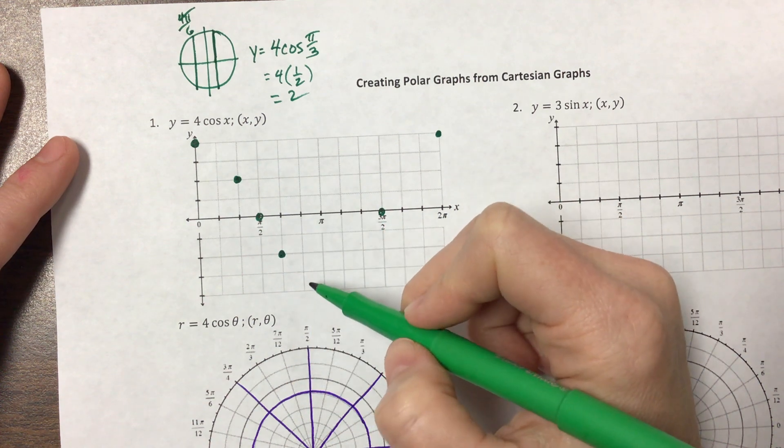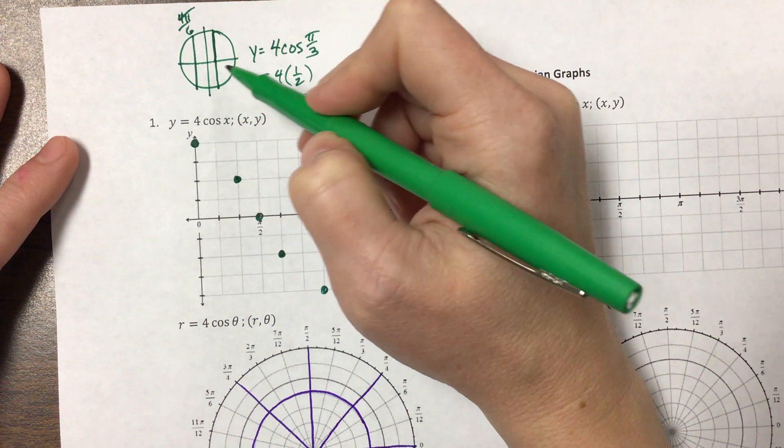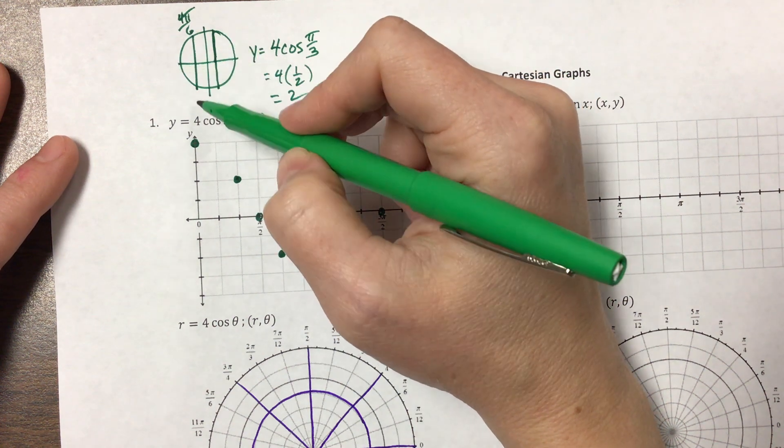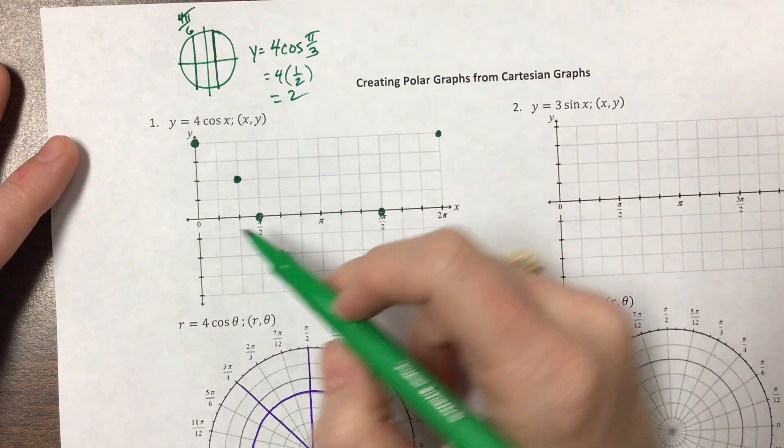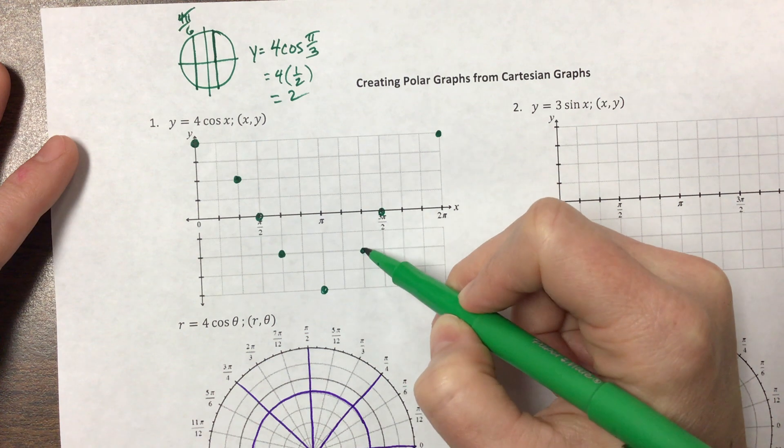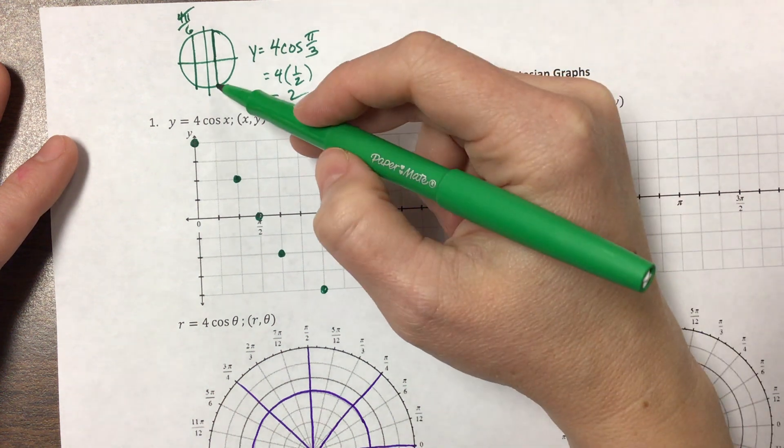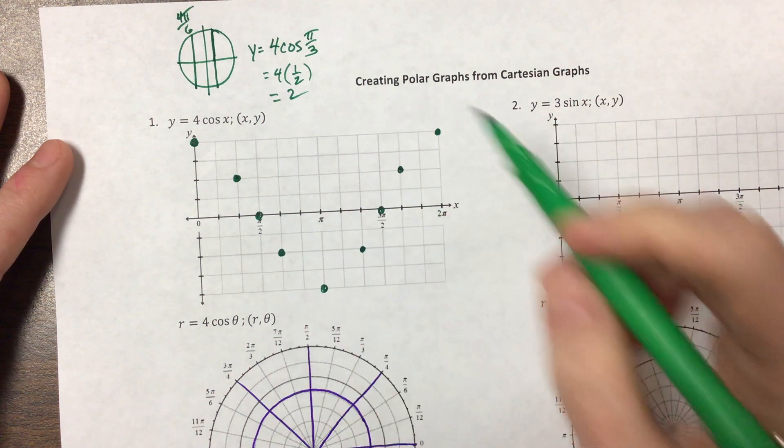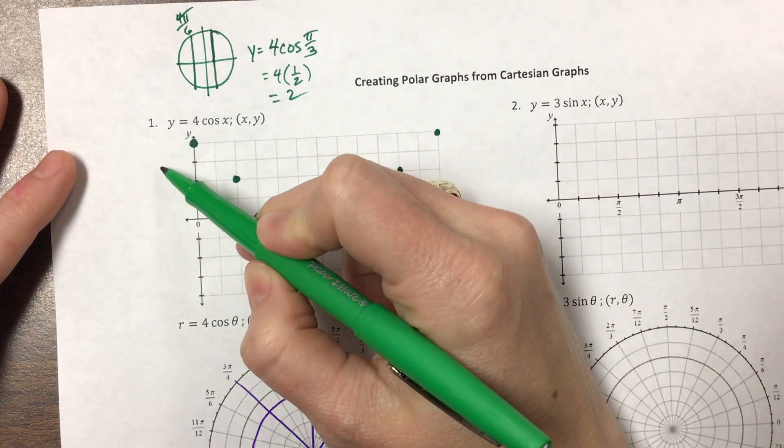And then here at 4π/3, which is 8π/6, so 1, 2, 3, 4, 5, 6, 7, 8. And I'm here. And then I get back to this point right here. I just wanted a few more points on my graph.